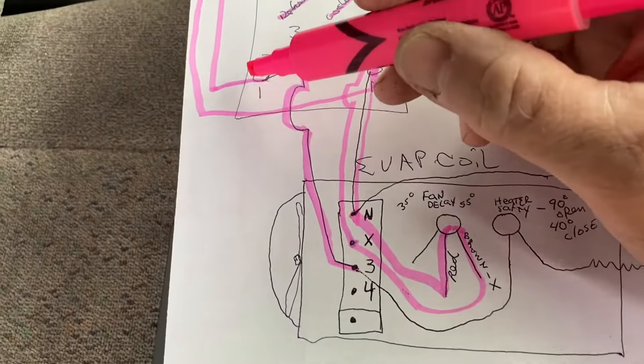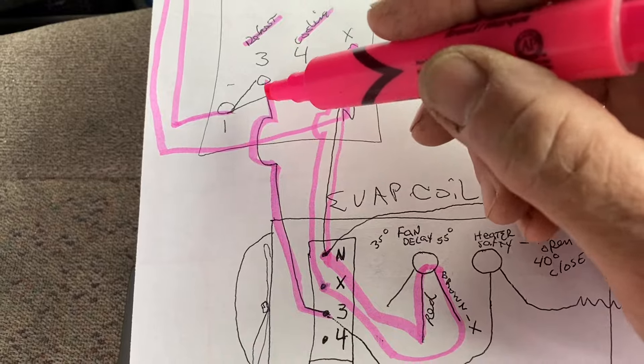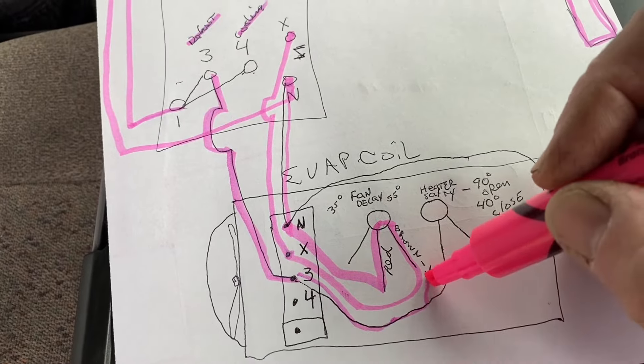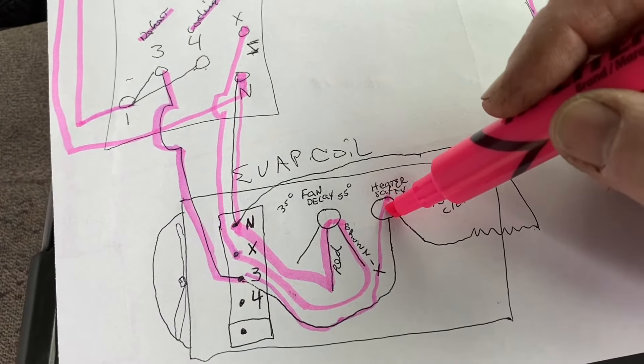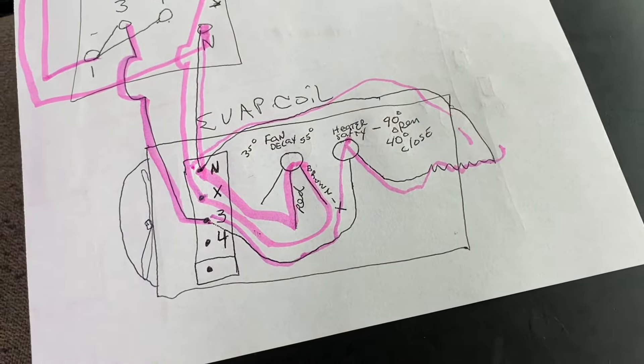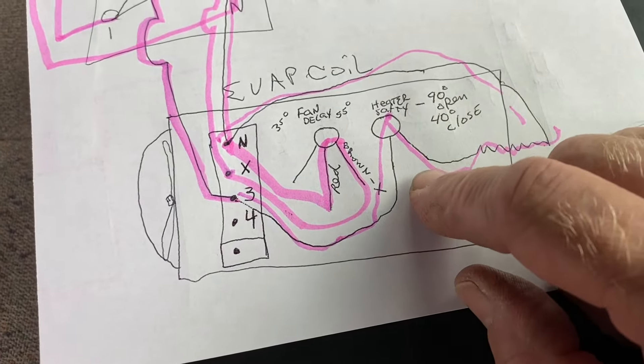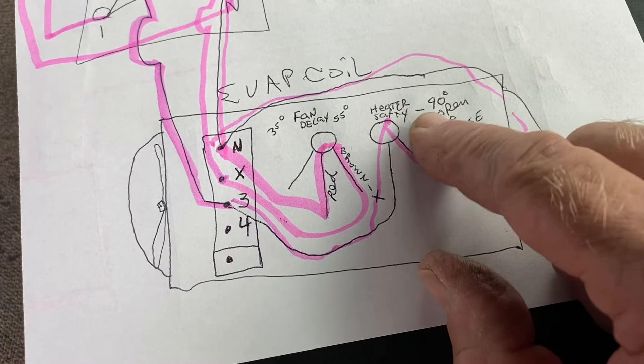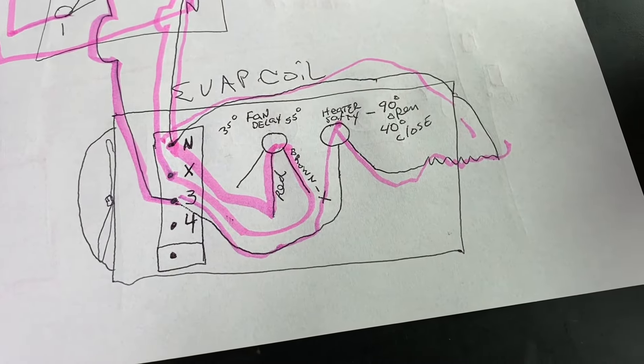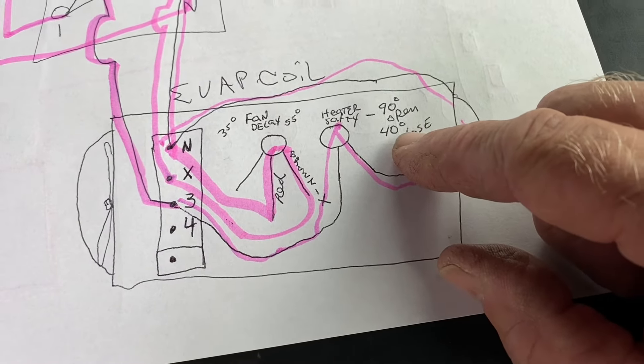So it comes from the breaker panel to one, up to three. When the time clock goes into defrost, it switches to three, comes down, hits our terminal block, comes on around through our heater safety to our defrost heaters and then back on around to N to complete the circuit for 230 volts. Now if something fails and it gets too hot in the coil and it gets to 90 degrees, this heater safety is going to open, take the heaters out of the line and protect our system. This doesn't reclose back until we get to 40 degrees.